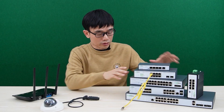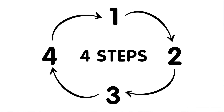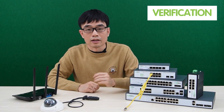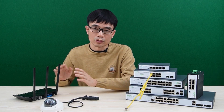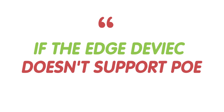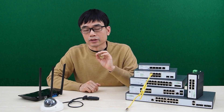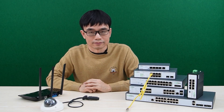Before the switch sends power to any IP device, there are four steps to go through. The first step is verification — we need to verify that the edge device also supports PoE. If the edge device doesn't support PoE, like this router, the switch will not supply any power, but it will still provide data exchange.